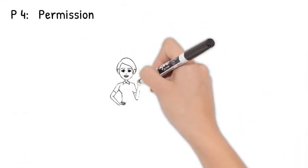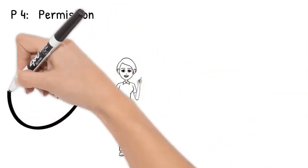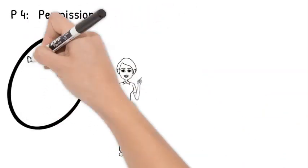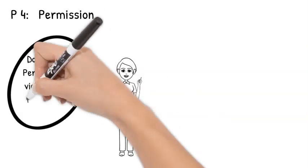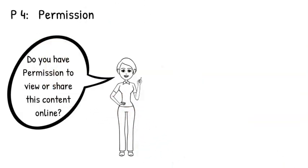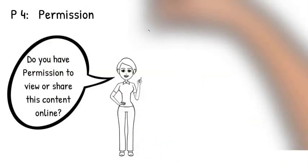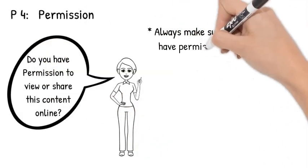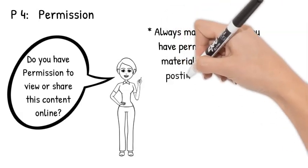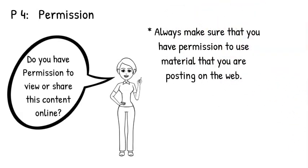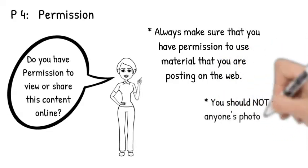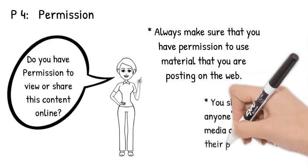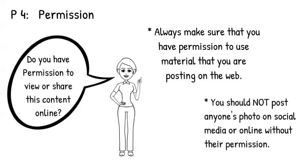P number four: permission. This is a big one. Ask yourself, do I have permission to view or share this content online? Always make sure that you have permission to use material that you are posting or sharing online. You should not post anyone's photo on social media or online without their permission.